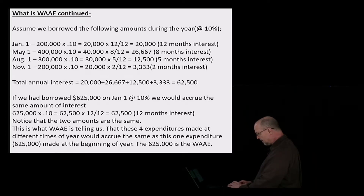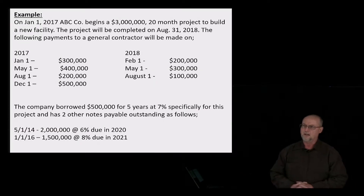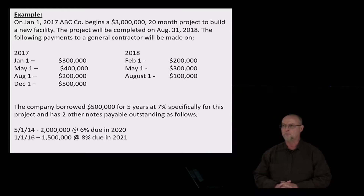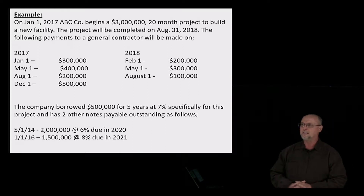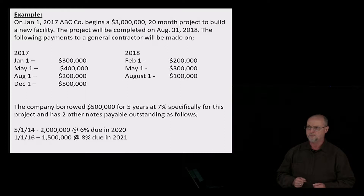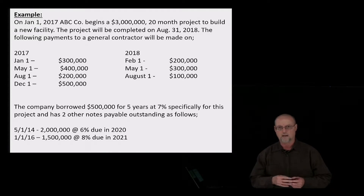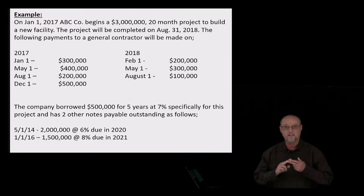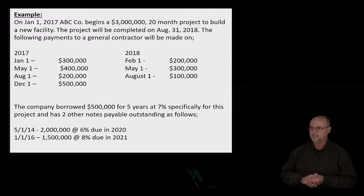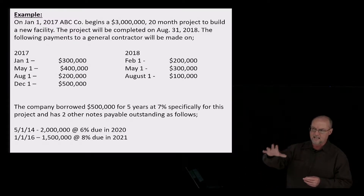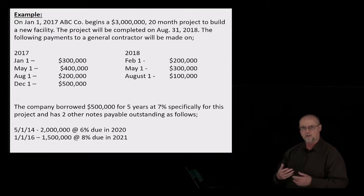Let's take a look at an example to illustrate this whole process. On January 1st, 2017, ABC begins a $3 million, 20-month project to build a new facility. The project will be completed on August 31st, 2018, and the following payments were made in each of the two years — four payments in 2017 and three payments in 2018. The company also has the following debt: $500,000 borrowed at 7% specifically for this project as a five-year note, plus a $2 million note at 6% due in 2020, and a $1.5 million note at 8% due in 2021. We'll take these three notes payable into account to calculate how much interest to capitalize.